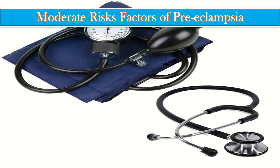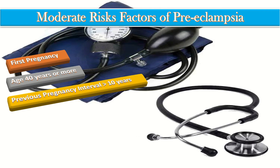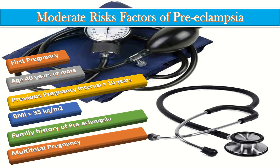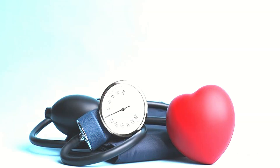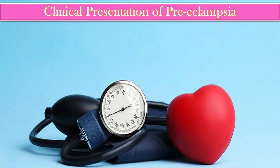The moderate risk factors for preeclampsia include first pregnancy, age 40 years or older, pregnancy interval of more than 10 years, body mass index of 35 kg per meter squared or more at the first visit, family history of preeclampsia, and multi-fetal pregnancy.